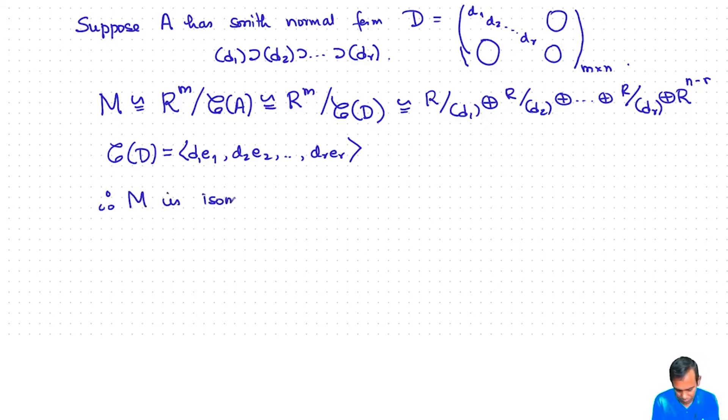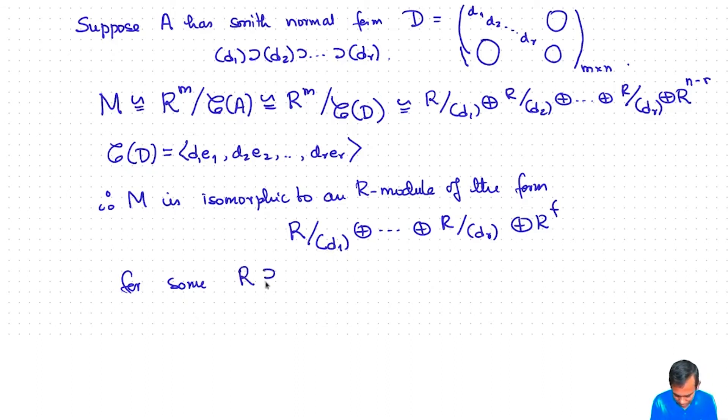M is isomorphic to an R-module of the form R mod—now I might renumber these, disregarding the first few di's which are units. But renumbering things and so on, maybe changing r if necessary, what we get is R mod d1 direct sum R mod d2 and so on, for some r. Now none of these are units; I have just disregarded the di's that are units. And so we have that d1 is a proper ideal, d1 contains d2 contains and so on.